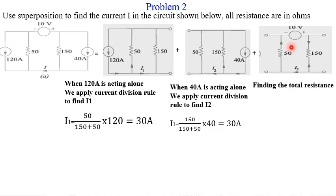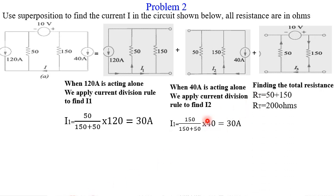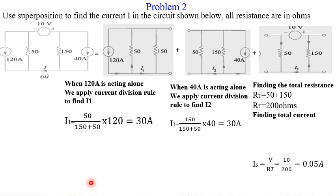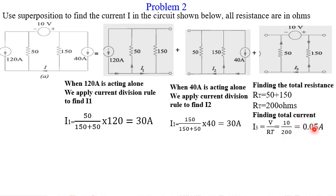When the 10-volt source is acting alone, we cannot use current division since no current source is given. We find the total resistance: the 50-ohm and 150-ohm resistors are in series, giving a total resistance of 200 ohms. The total current I3 equals the voltage divided by resistance: 10 divided by 200, which equals 0.05 amps.